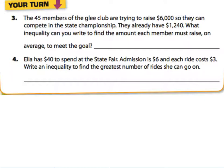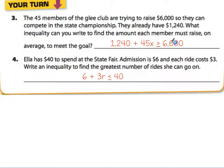Now it's your turn. Go ahead and try these problems on your own. Remember: determine your variable, then determine your symbol, then come back and check your answer. For the first one, you started out with $1,240, and each of the 45 members is going to add a certain amount of money to raise more than or equal to $6,000. For the second problem, you have the $6 admission fee plus $3 per ride, and that has to be less than or equal to the $40 she has to spend at the state fair.